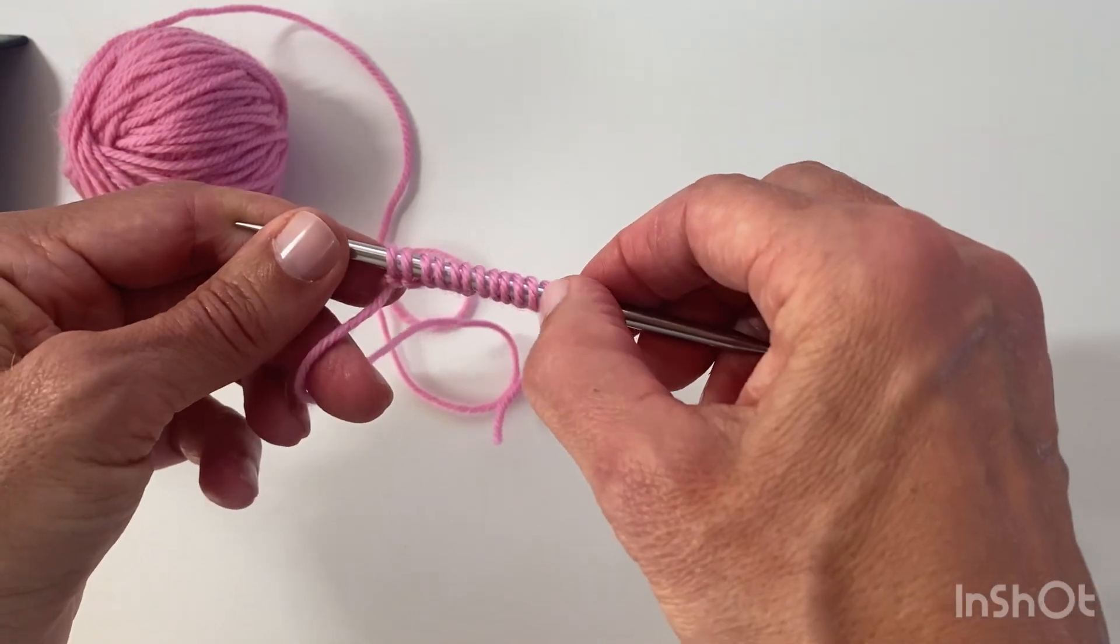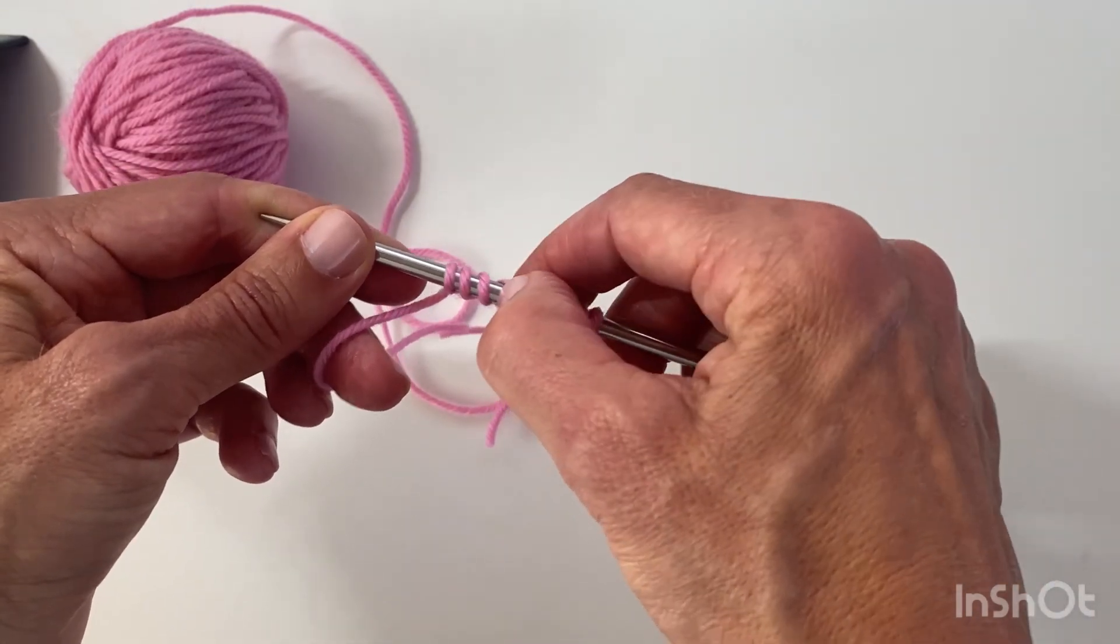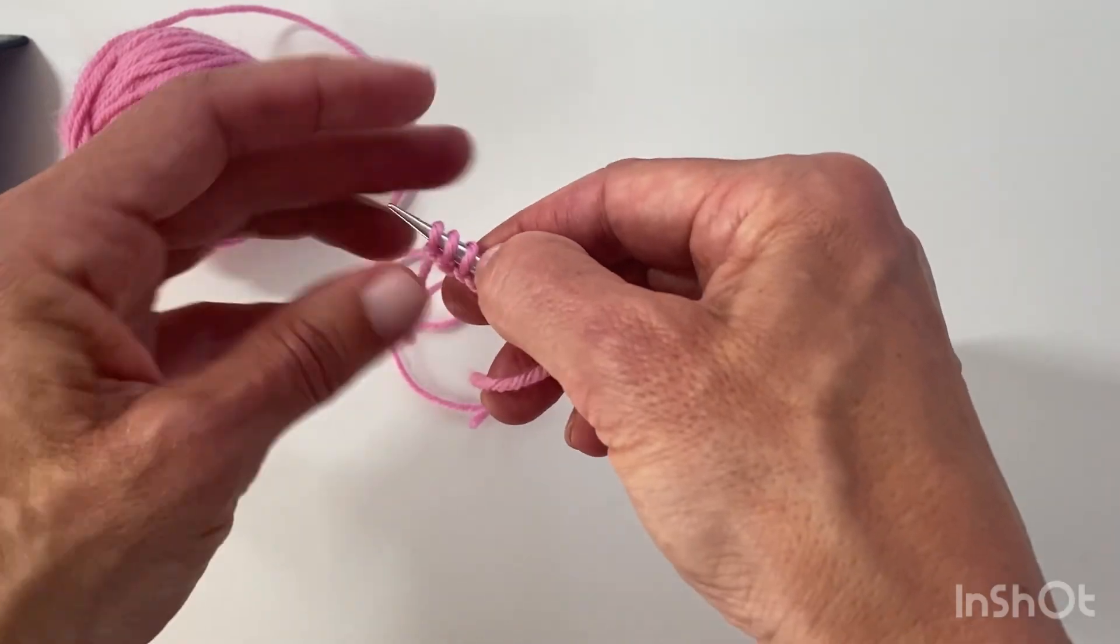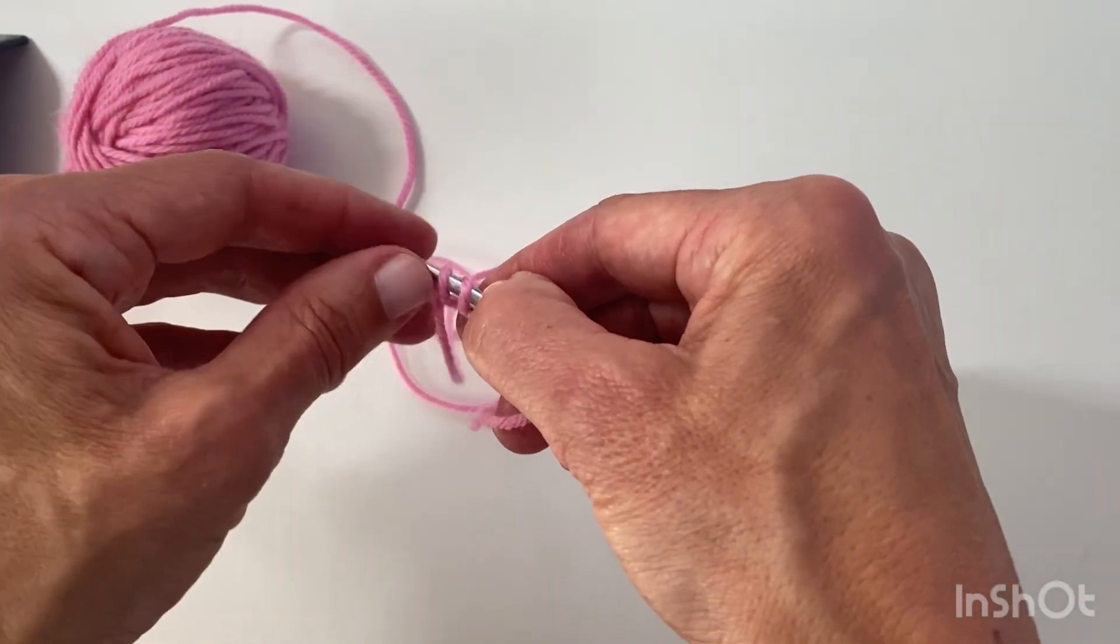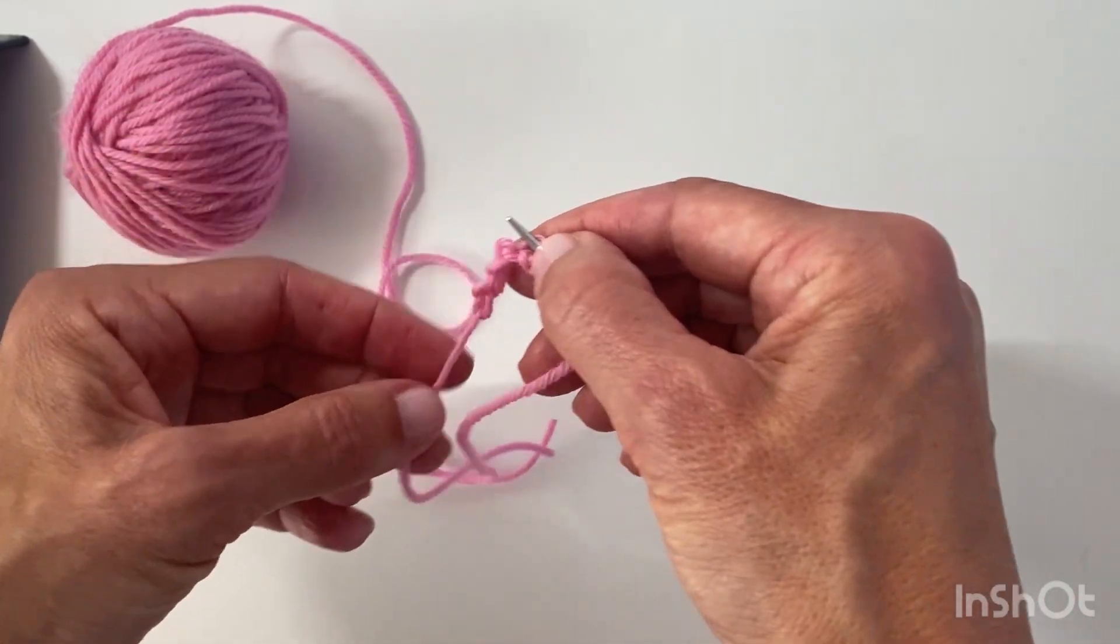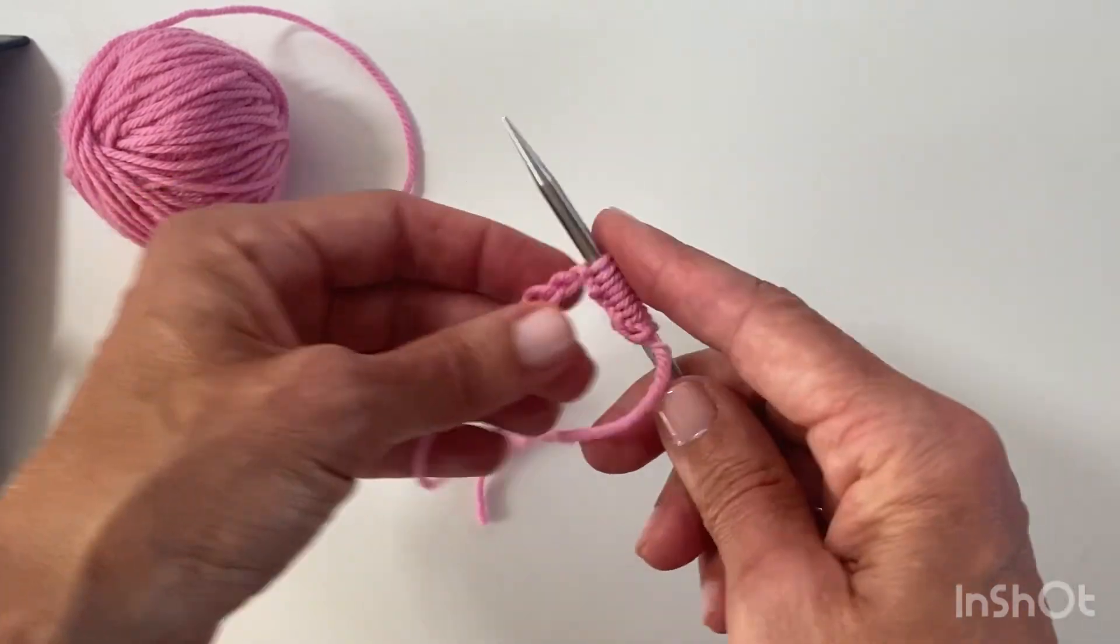So then I'll go two, four, six, eight, ten. They're the last three that I cast on, and I'm just going to bump them off. And you'll see that it creates a little chain there.